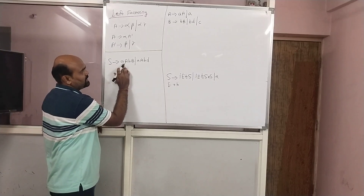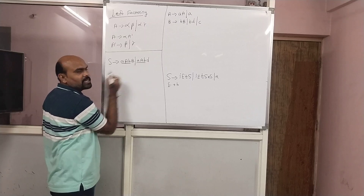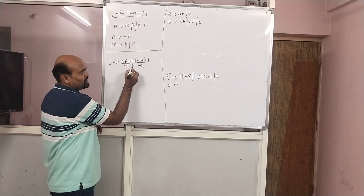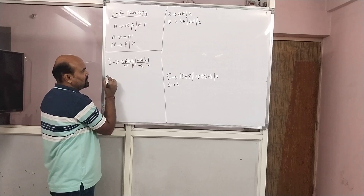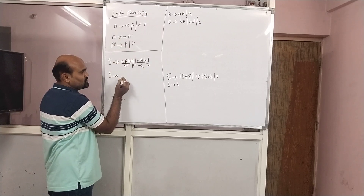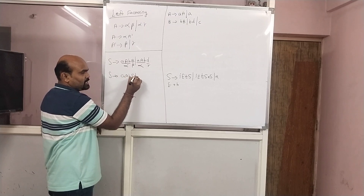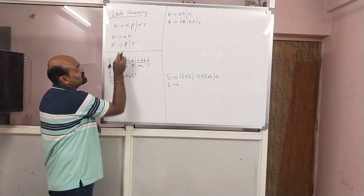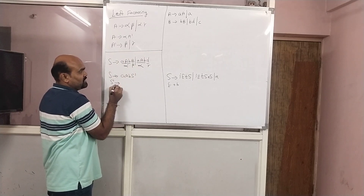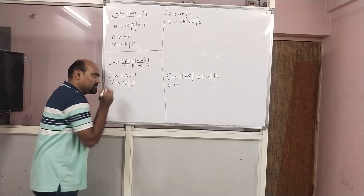For example, S gives A A B slash A B. Here A B is the same in both, so this is the alpha. Beta is what remains in the first production, and gamma is what remains in the second. To solve: S gives A B S-dash, and S-dash gives the respective beta and gamma.